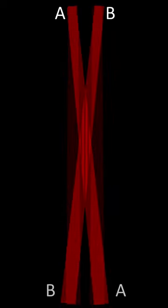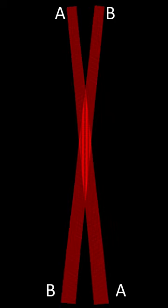This is how it works. Two narrow laser beams of equal intensity cross each other at a very small angle. Let's call them A and B.